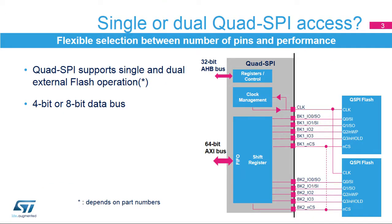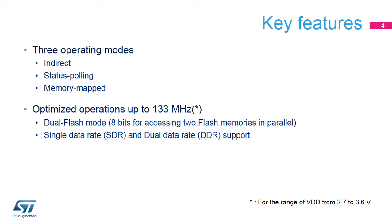The Quad SPI Memory Interface, integrated inside STM32F7 microcontrollers, provides a communication interface allowing the microcontroller to communicate with external SPI and Quad SPI memories. It supports the connection of one or two external memories, meaning data can be transferred over a 4- or 8-bit data bus. It gives the user flexibility to choose between 6 pins for a single and 10 pins for a double connection, and the performance of the data transfer: 4-bits for a single or 8-bits for a double connection.